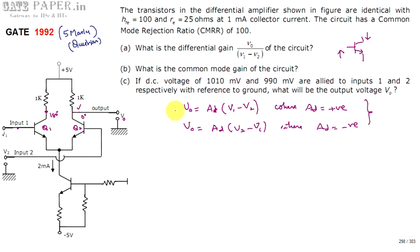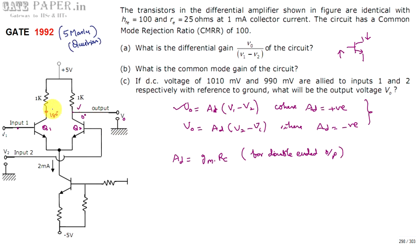Using the equation V0 = AD × (V1 - V2), the differential gain AD equals GM × RC for double-ended (differential) output, where you take the output as the difference between both transistors' outputs. For single-ended output — where the output is taken across only one transistor — AD equals GM × RC divided by 2.